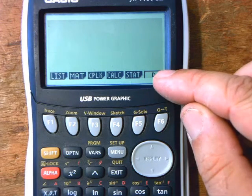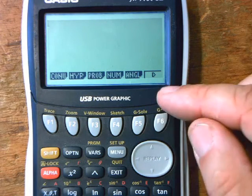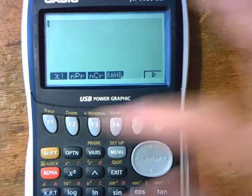You want that one because you're looking for probability, which is this middle one here. So you press that one there like that.